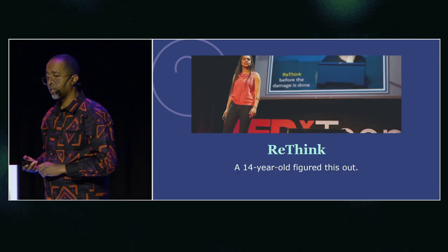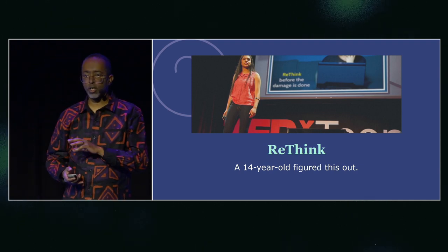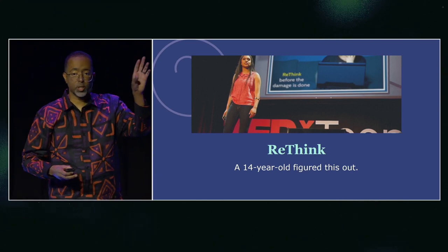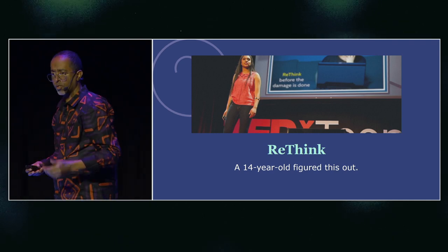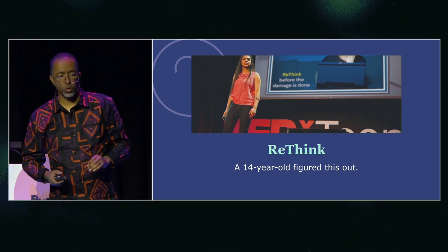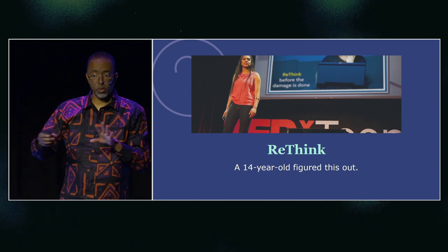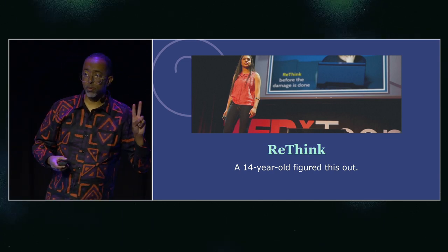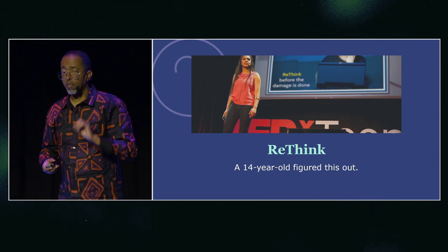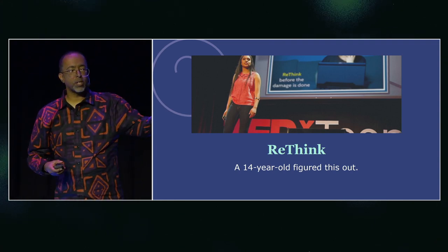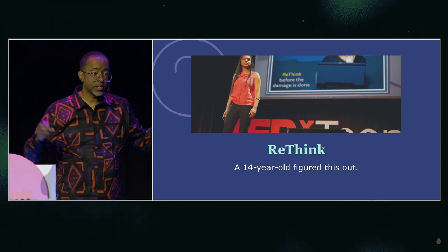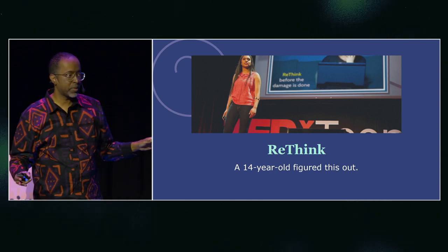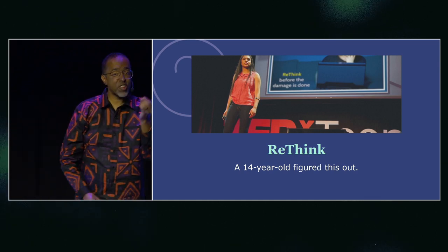Fortunately, this one is still with us — it's called Rethink. Trisha Prabhu was 14 years old when she got into the Google Science Fair with this project. It notices that thing you're about to post to social media, detects if it's hateful, and literally just pops up two sentences: 'Rethink has detected that this might be hurtful to somebody. Are you sure you want to post it?' In the test group — adolescents, not the greatest impulse control — over 90% of the people who saw that pop-up stopped and did not post the hateful thing. Most people out there are not evil; they are simply thoughtless. The second you remind them there's a human being on the other side, they back off. And it only takes two sentences to stop them.